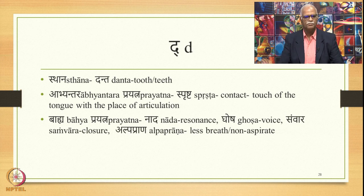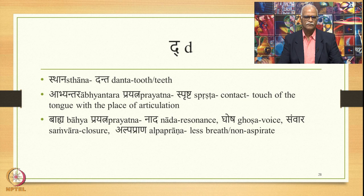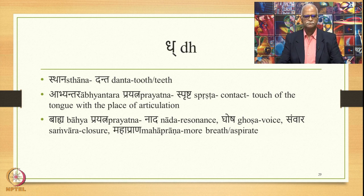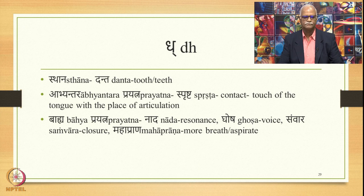The next sound is da. The place of articulation is danta. Abhyantara prayatna is sprashta — contact or touch of the tongue with the teeth. The bahya prayatna is nada (resonance), ghosha (voice), and samvara (closure). This is also alpaprana — requires less breath and is called non-aspirate. The next sound is dha. Place of articulation is danta. Abhyantara prayatna is sprashta. Bahya prayatna is nada, ghosha, and samvara. This is mahaprana — requires more breath and is called an aspirate.